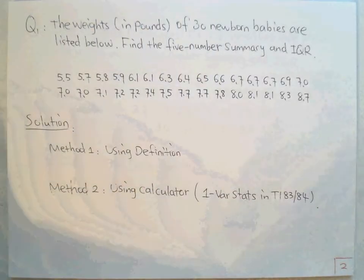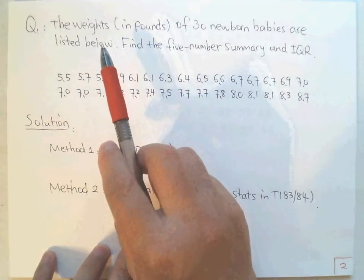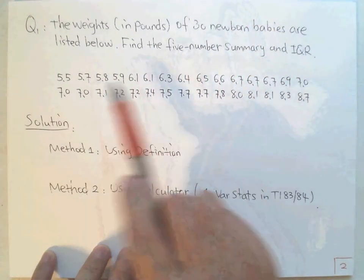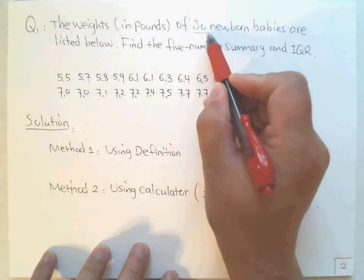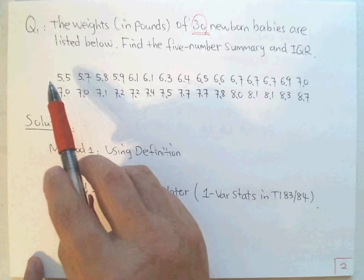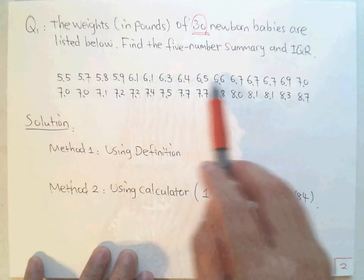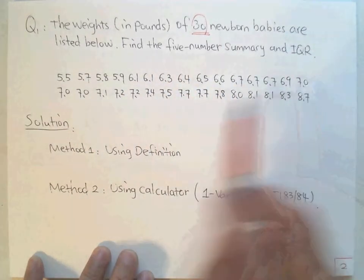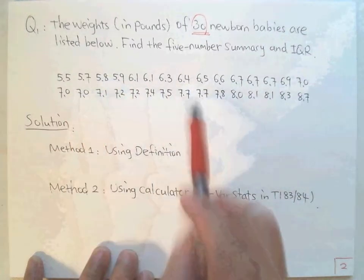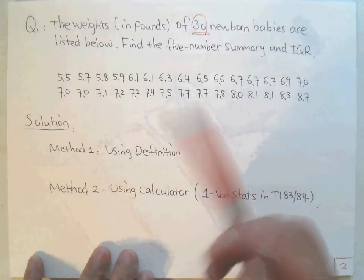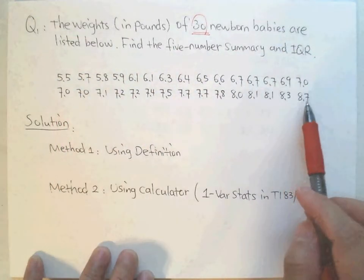Now let's look at two examples to find the five-number summary. In the first example, we have newborn baby weights with a sample size of 30. The data is shown here, ranging from 5.5 pounds. The data is already in ascending order, which is good.